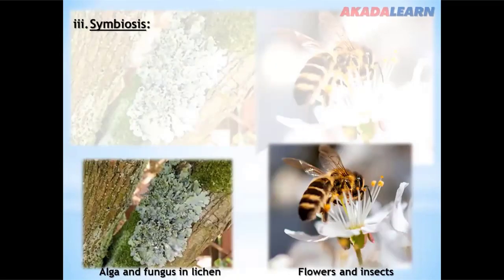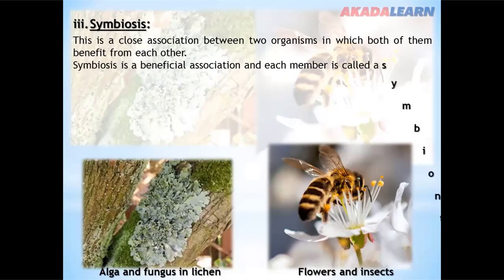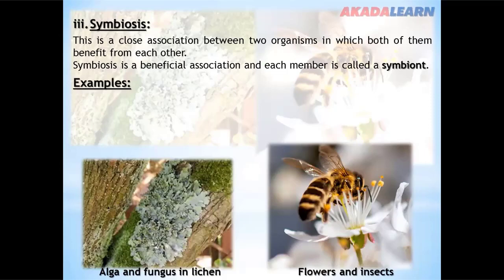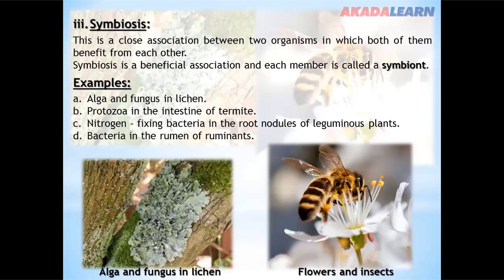Symbiosis is the close association between two organisms in which both of them benefit from each other. It is a beneficial association, and each member is called a symbiont. Examples of symbiotic associations: algae and fungus in lichen; protozoa in the intestine of termites; nitrogen-fixing bacteria in the root nodules of leguminous plants; bacteria in the rumen of ruminants; and flowers and insects.